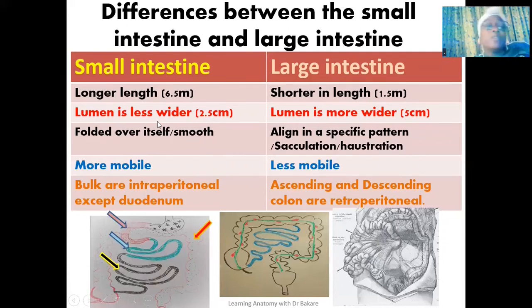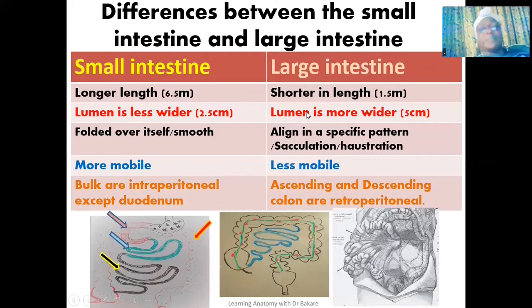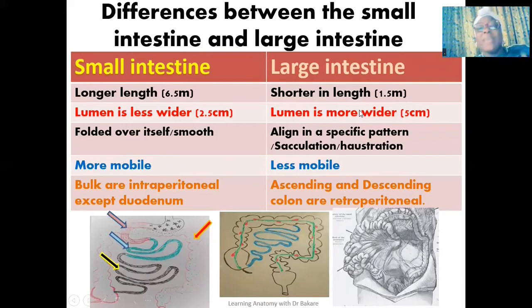Talking about the lumen, the lumen of the small intestine is narrower while the lumen of the large intestine is wider — about 2.5 centimeters versus 5 cm. The lumen of the large intestine is about double that of the small intestine. This is where the name 'large intestine' is derived from — not based on length, because the large intestine is actually shorter, but because its lumen is wider.